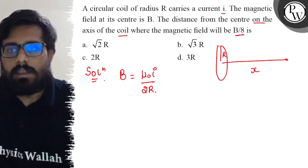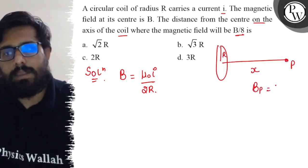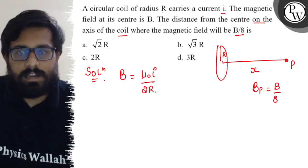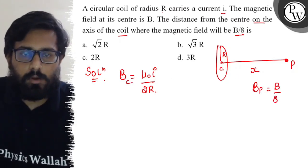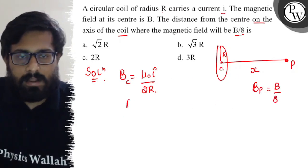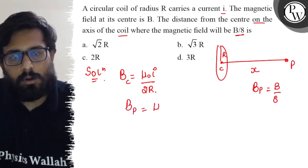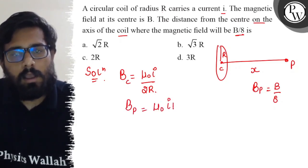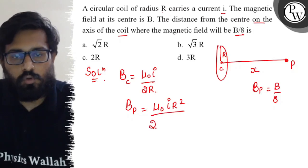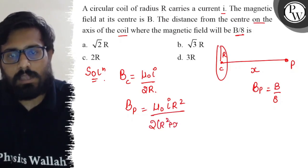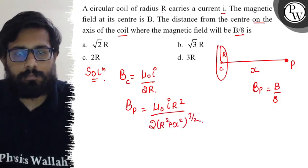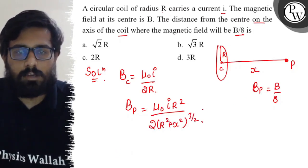We have this point P at distance x. We need to find where the magnetic field is B by 8. At center the magnetic field is μ₀i upon 2R. So at point P where magnetic field, the formula is μ₀iR² upon 2(R² + x²)^(3/2).